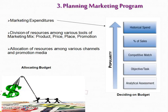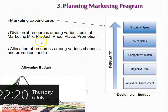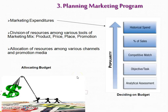After deciding these strategies in the second stage, comes the third stage: planning the marketing program. To implement those strategies we need a certain budget. The company decides about marketing expenditure using various methods according to their convenience. After deciding the budget, those resources are allocated among various marketing mix tools — how much money to include for product, price, place, promotion, and various channels and promotion media.